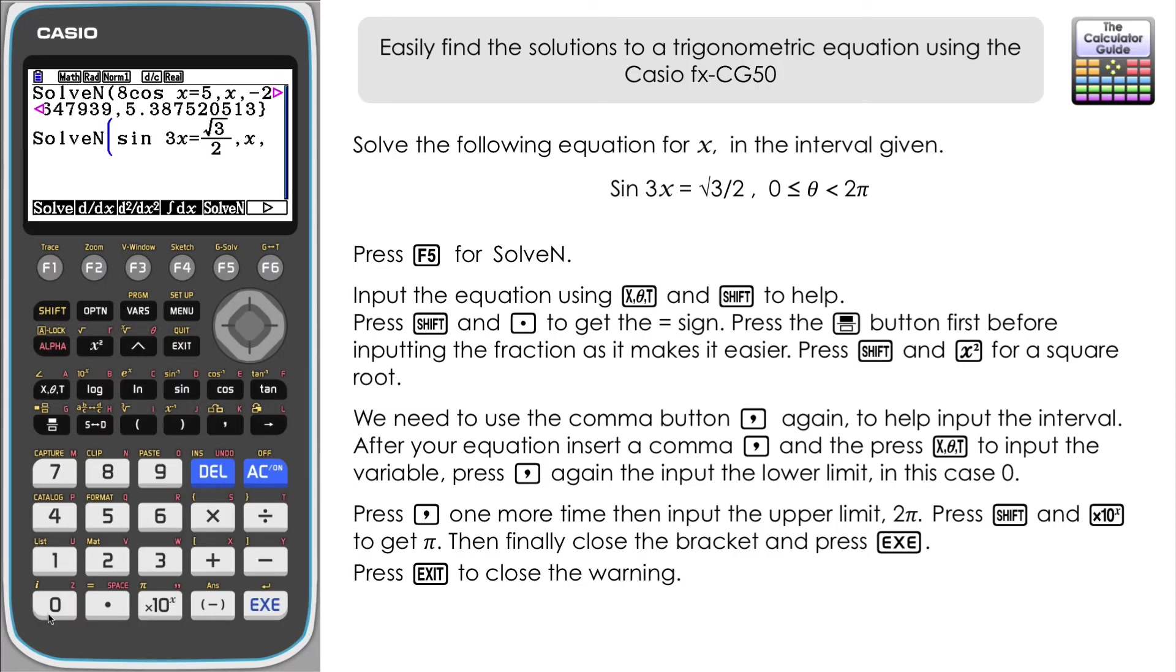So remember we're using the comma to do this. Comma, we're solving for x, and then comma, we want the lower limit, solving for x between 0 and comma, and then the upper limit is 2π. So we've got all the information there, so all that's left now is to close the right bracket. Just double check we've got everything and then press execute.